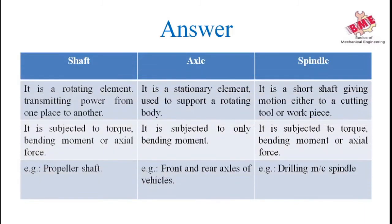Shaft: it is a rotating element that transmits power from one place to another. Axle: it is a non-rotating element which does not transmit power but holds the wheels — it supports the rotating element. Spindle: it is a short shaft giving motion either to the cutting tool or the workpiece. The second difference: a shaft is subjected to torque, bending moment, or axial force. An axle is only subjected to bending moment. A spindle is subjected to torque, bending moment, or axial force.